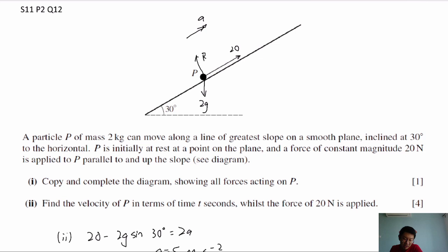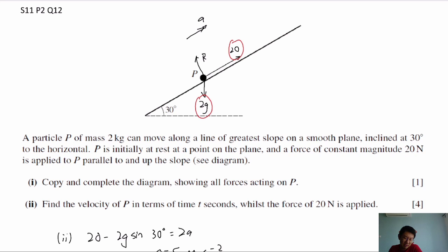For this one, it's not difficult to do. We have the 20 N already given by the arrow in the figure. The other forces we have are the weight — 2G for the weight — and also the reaction force, the normal reaction force. That's basically all our forces.